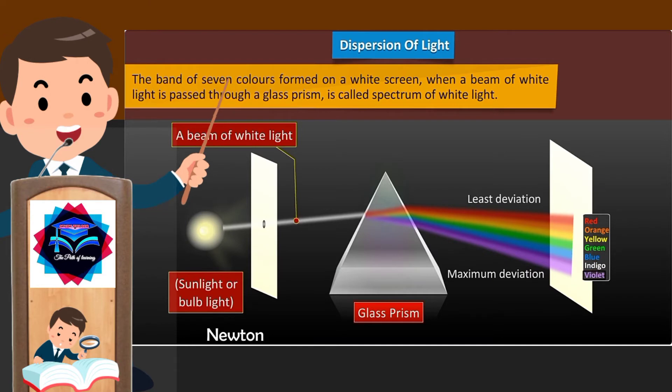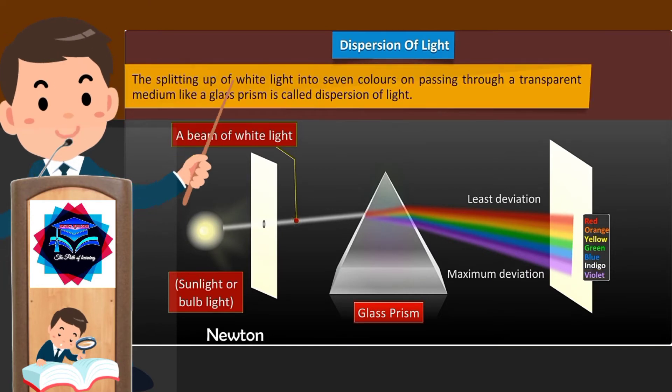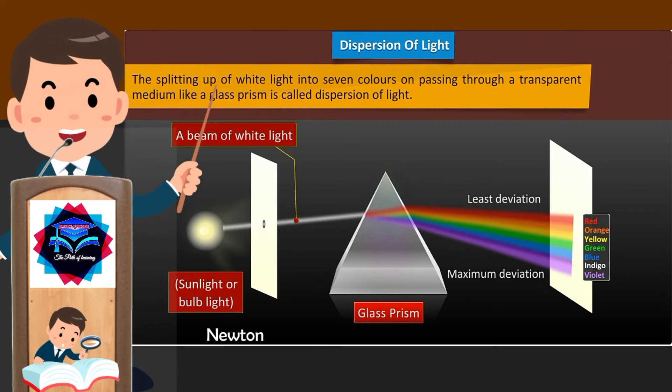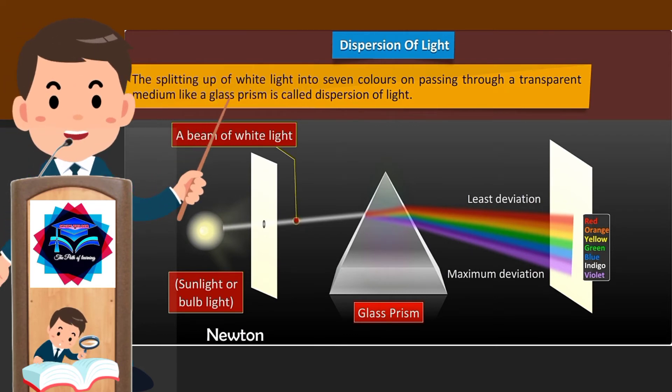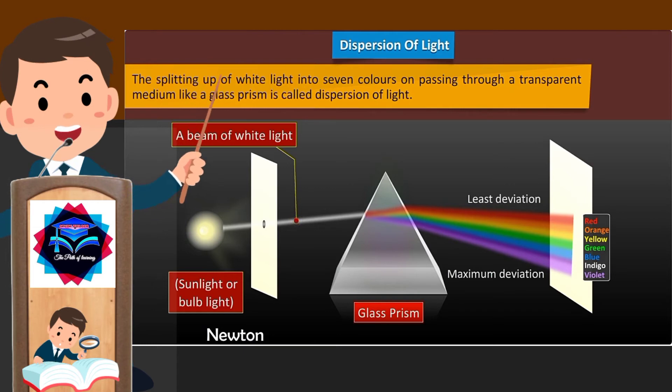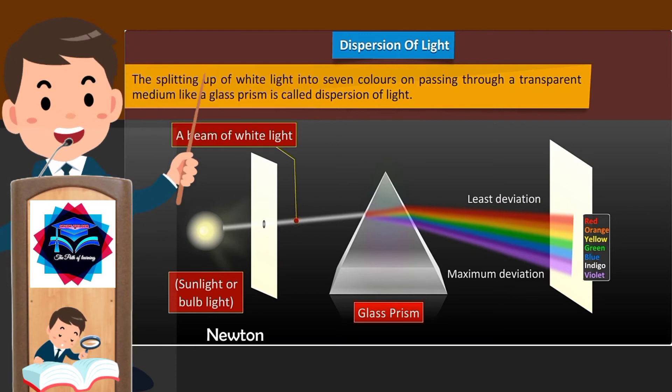The splitting up of white light into seven colors on passing through a transparent medium like a glass prism is called dispersion of light. The dispersion of white light occurs because colors of white light travel at different speeds through the glass prism.